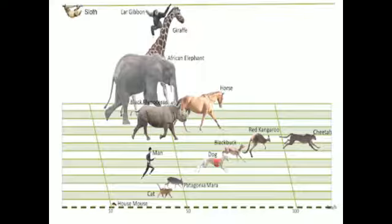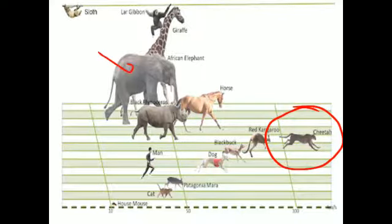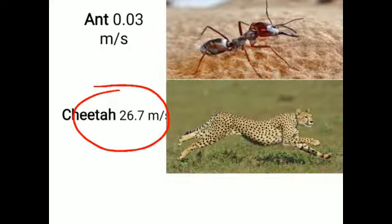We are often told that the cheetah is the fastest moving animal. If all animals and human beings were in a race, the cheetah would win, and the very heavy elephant would be last. The ant moves at 0.03 meters per second, but in the same second the cheetah runs 26.7 meters — making the ant the slowest and the cheetah the fastest moving animal.